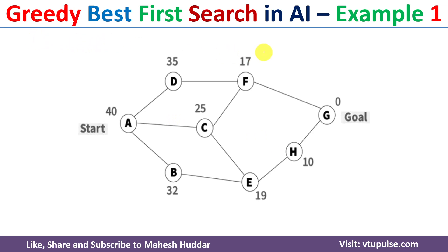We need to apply the greedy best first search algorithm to this graph and find a path from start state A to goal state G. We consider the initial state A first, and check whether A is the goal state. A is not the goal state, so we expand A with the possible actions. There are three possible actions: we can go from A to B, A to C, or A to D.